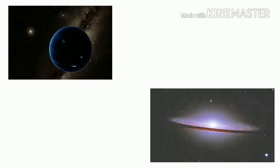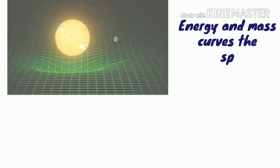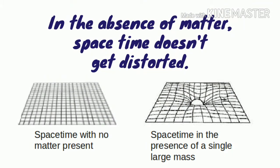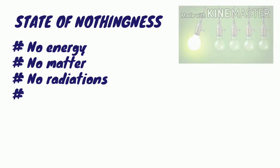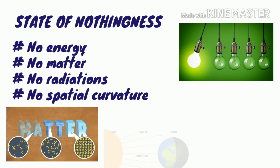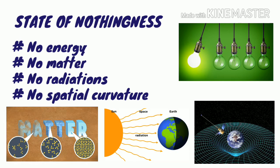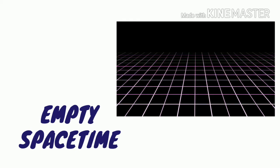The presence of objects with mass and energy distorts the space-time. For attaining a state of nothingness, the universe should be free from such objects. The state of nothingness means no energy, no matter, no radiations and no spatial curvature, i.e. empty space-time.